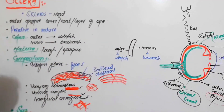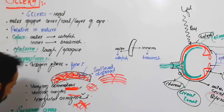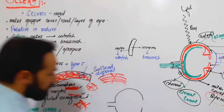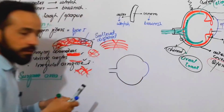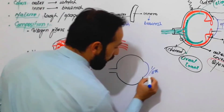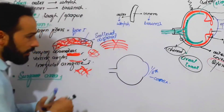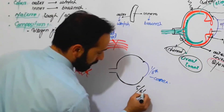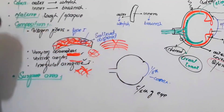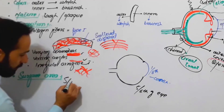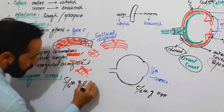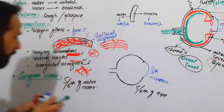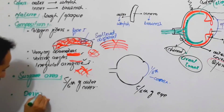Now let us discuss the surface area of the sclera. If we draw the eye, the cornea covers one-sixth of the eye as we said in the previous lecture, and the posterior five-sixths of the eye is the sclera. So the surface area of the sclera — or the outer cover — is five-sixths of the eye.